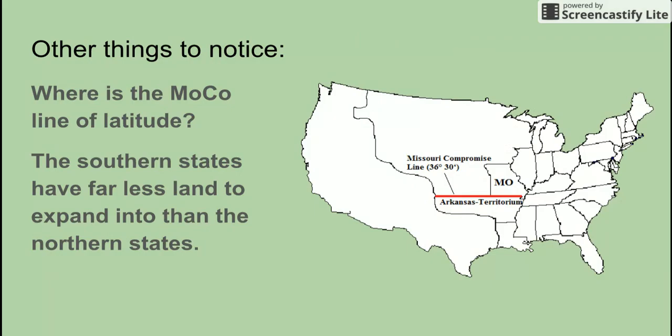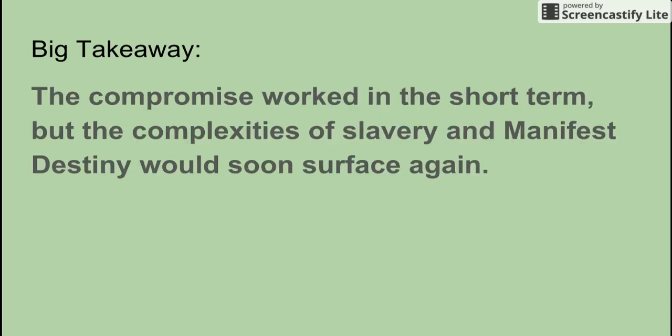Look at that red line — that's the 36°30 line, the line of latitude. If southern states expanded slavery, they had less territory to do so under the Missouri Compromise. The northern states had a lot more, which is why you can see this was just a temporary thing. They wanted to extend the line to the Pacific, not just to the Rockies. The big takeaway is that the compromise worked in the short term — it was a temporary fix. But the complexities of slavery and Manifest Destiny would soon surface again. The Missouri Compromise was not getting to the heart of any issue; it was just a band-aid, leaving someone else in Congress to deal with it later.